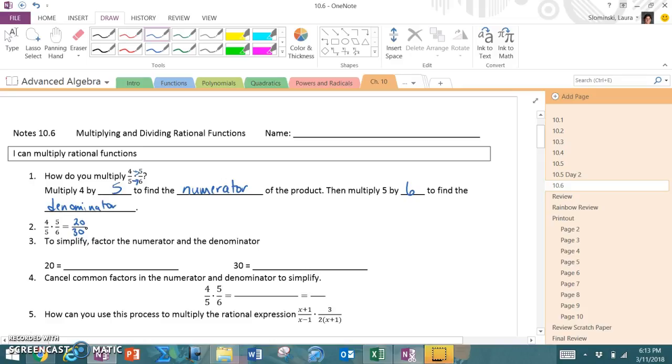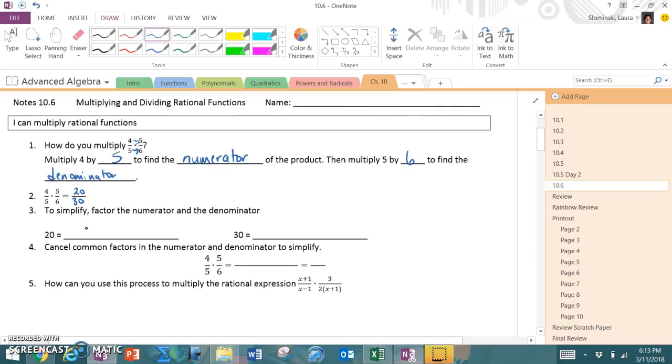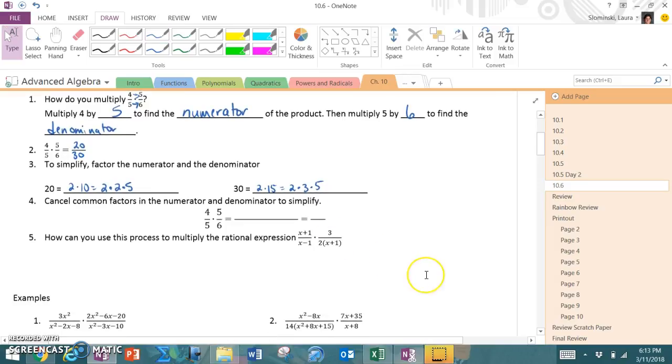To simplify, we would factor the numerator and denominator. So we could write 20 as 2 times 10, which is 2 times 2 times 5. We could do the same thing with 30, which is 2 times 15, or 2 times 3 times 5. And you could see that we could cancel out a 5 on top and bottom and a 2 on top and bottom, and we get 2 thirds.